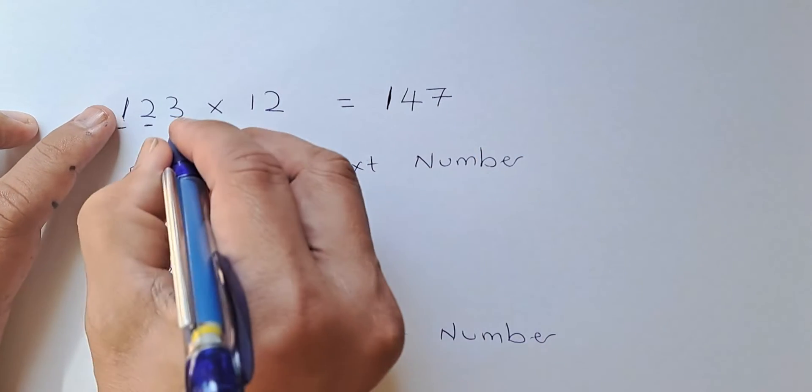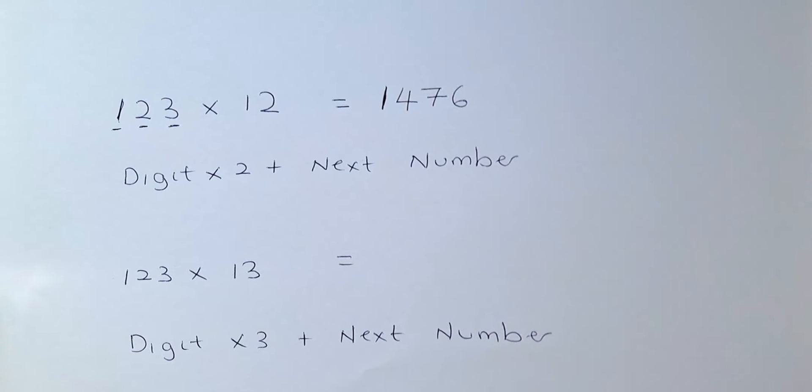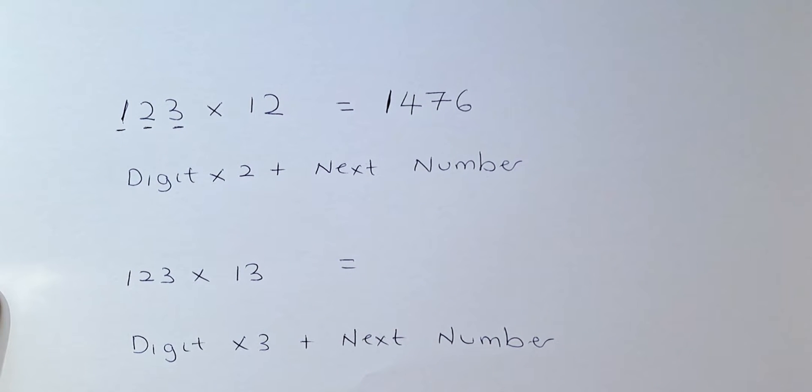And last but not least we look at 3. 3 times 2, there's no other digit so it's 1, 4, 7, 6. That is how you multiply by 12.